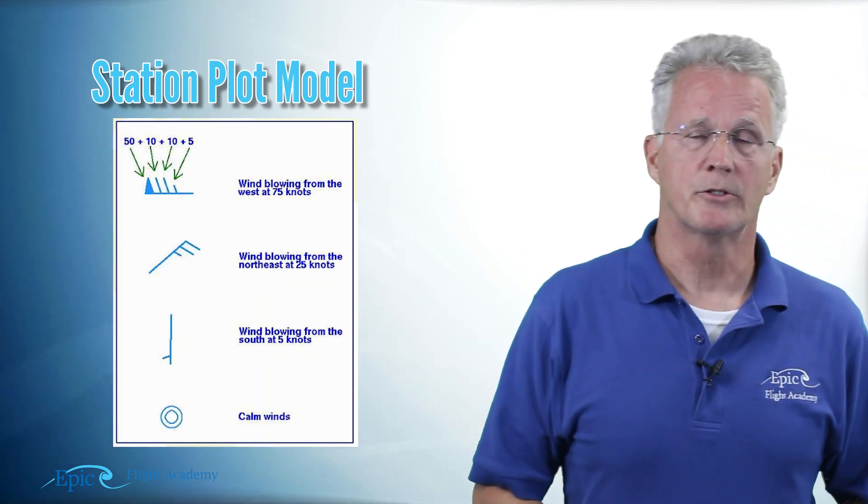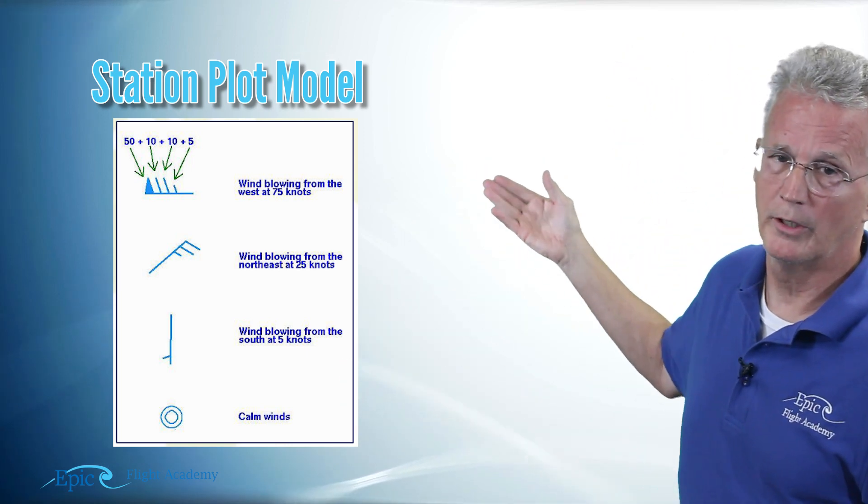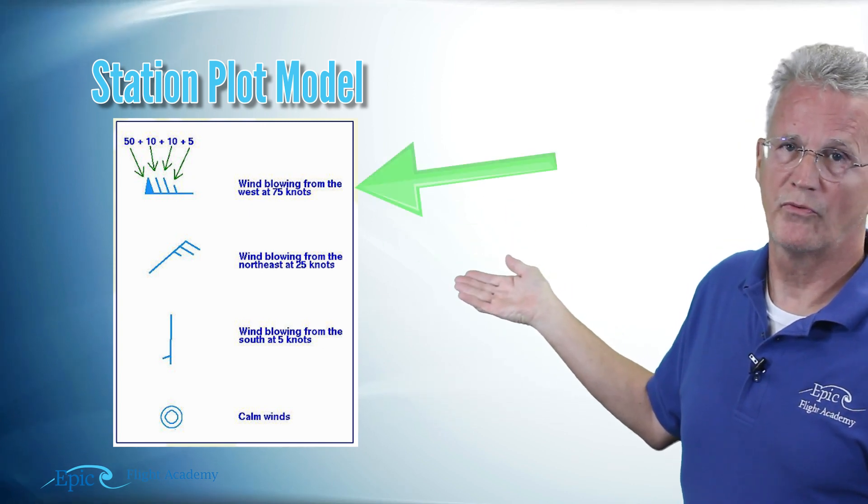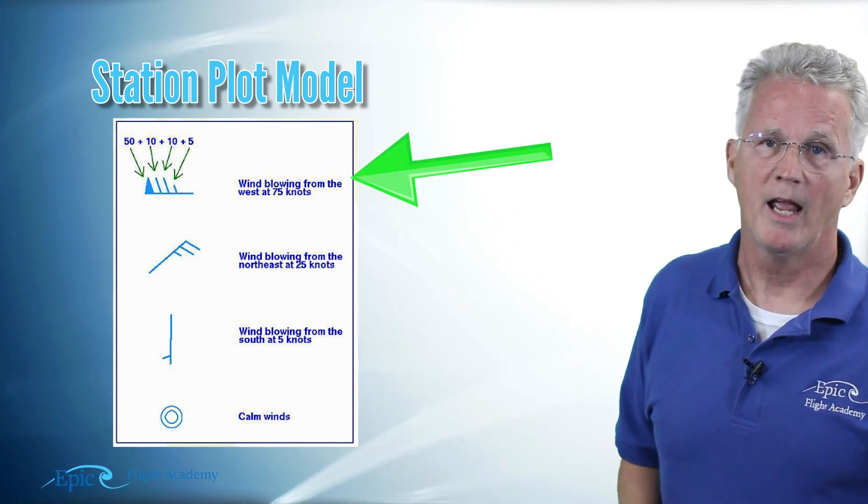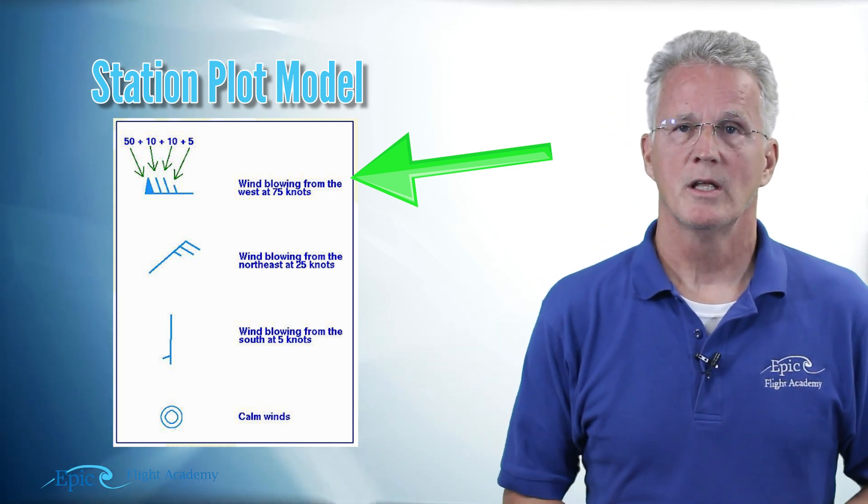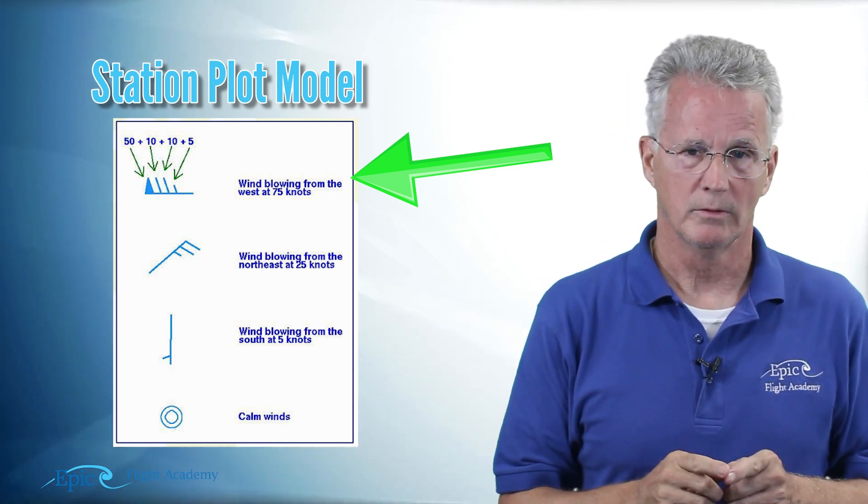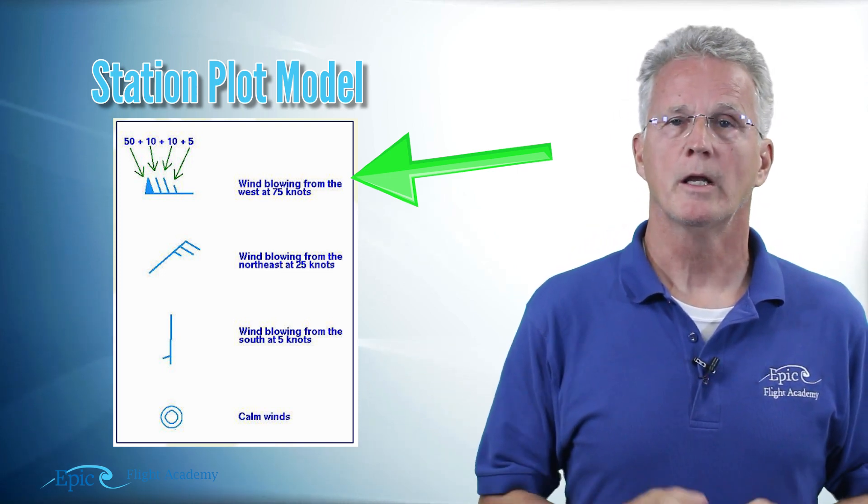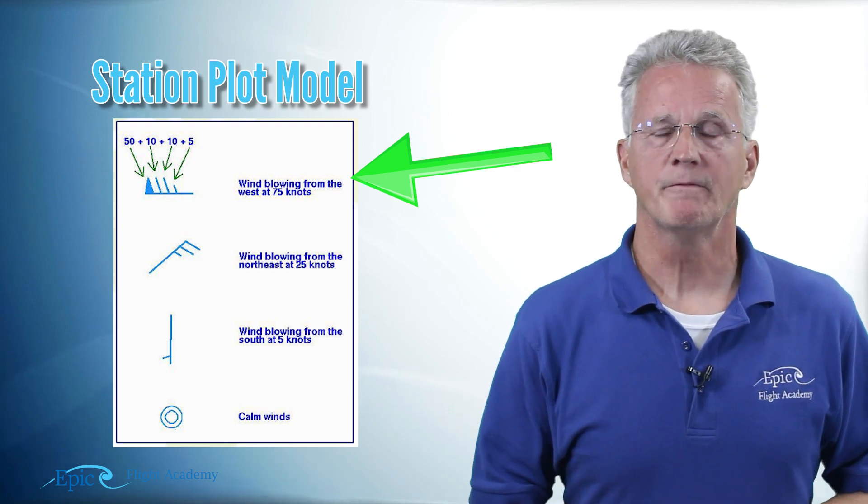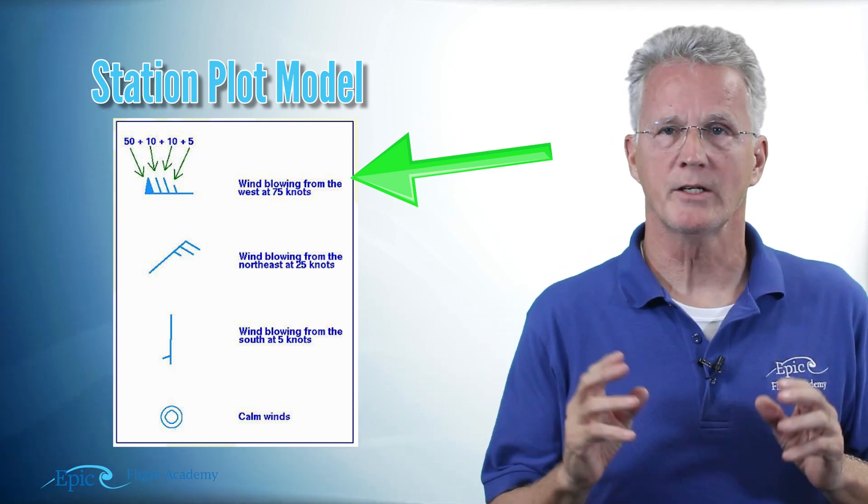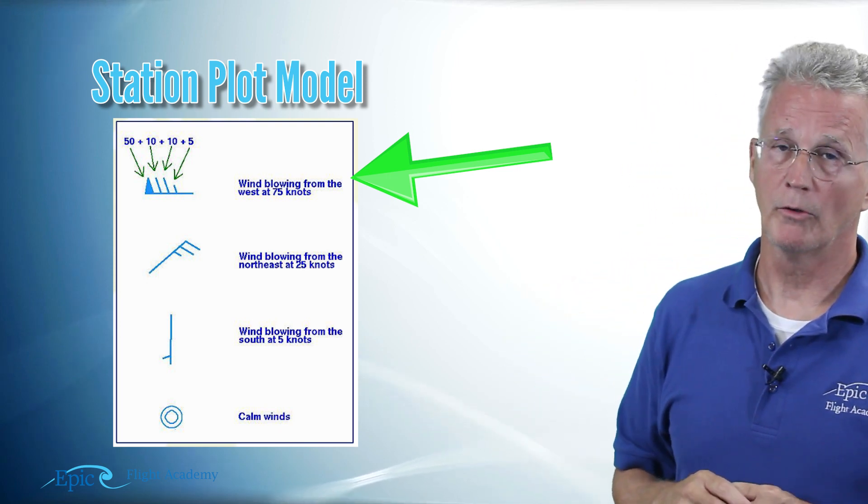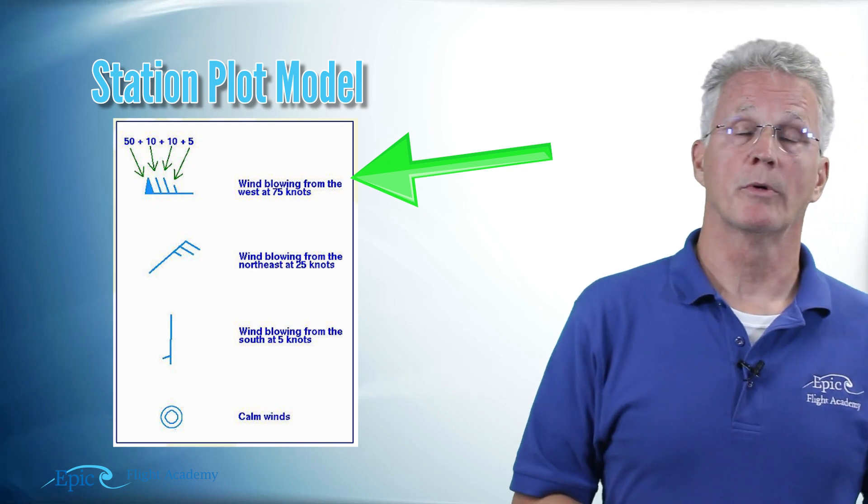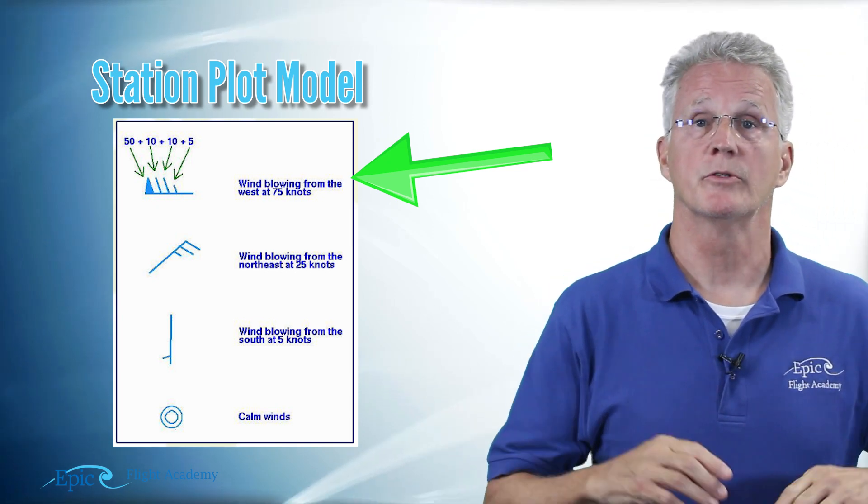Now on that station plot model you may also see a tail or sometimes we call it a feather attached to it. Now I want to show those to you. Here in this example we see this feather and on this feather we see this little triangle, two long lines and one short line. Now here's how we interpret that: that feather will be attached to that station plot model in the direction from which the wind is blowing. Remember we always talk about wind in the direction that it's coming from.